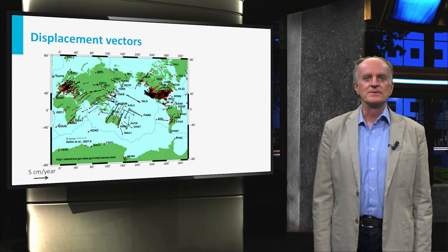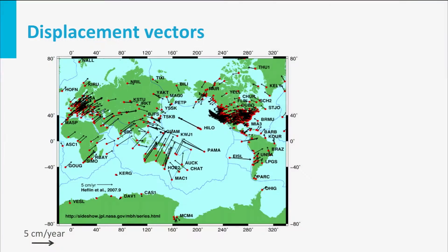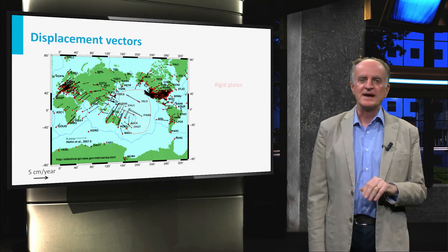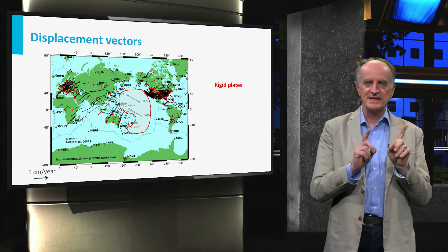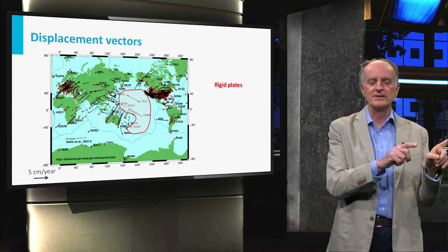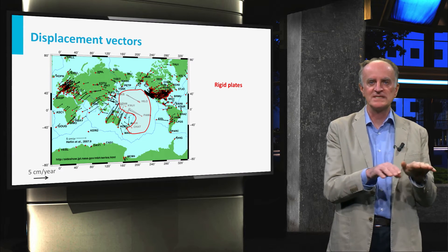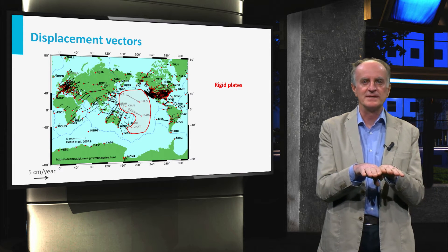This map shows you the displacement per year experienced by specific points with respect to an absolute system of reference. On the map, you can find domains where displacement vectors have similar orientation and magnitude, suggesting that these points lie on a rigid plate.